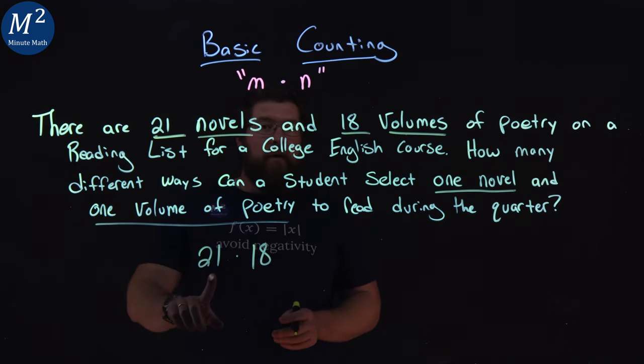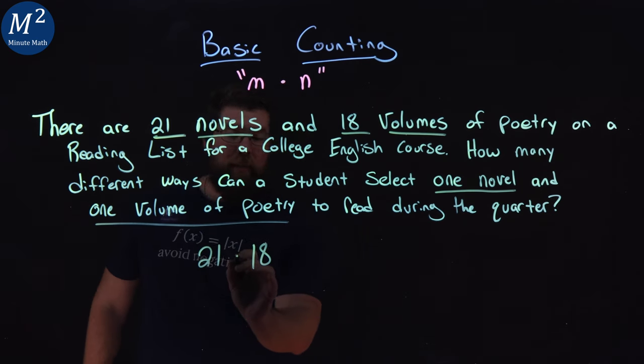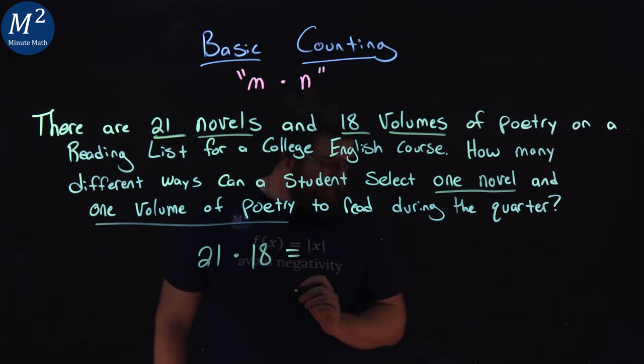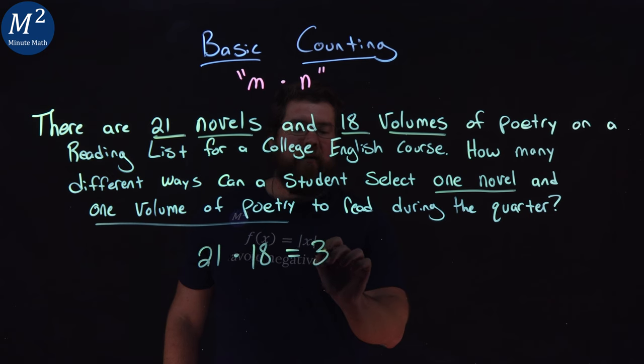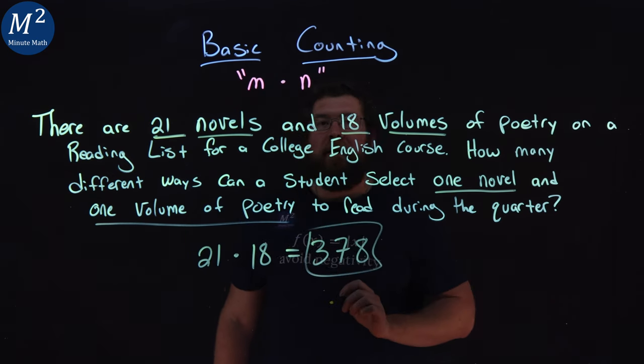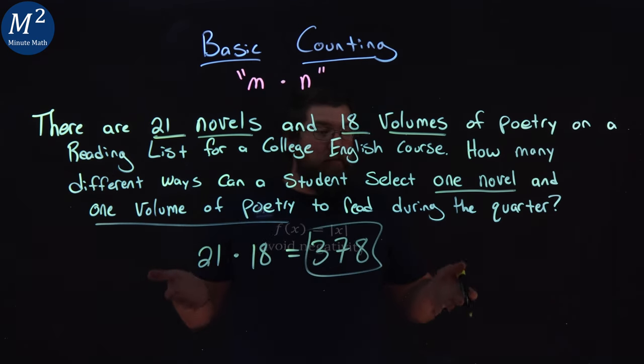So one out of the 21, one out of the 18, we multiply these two numbers together and we get 378. And that is simply our answer.